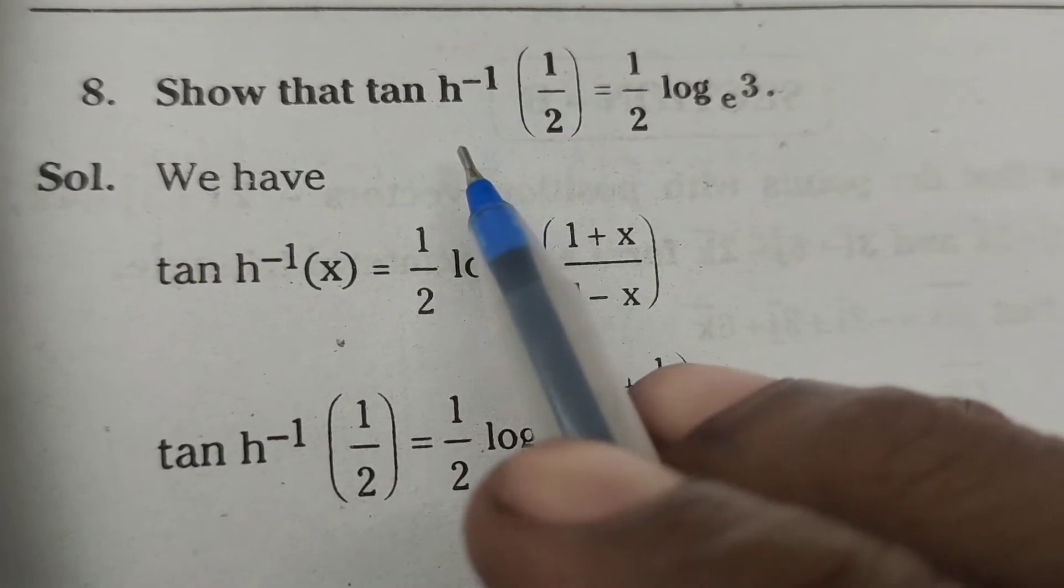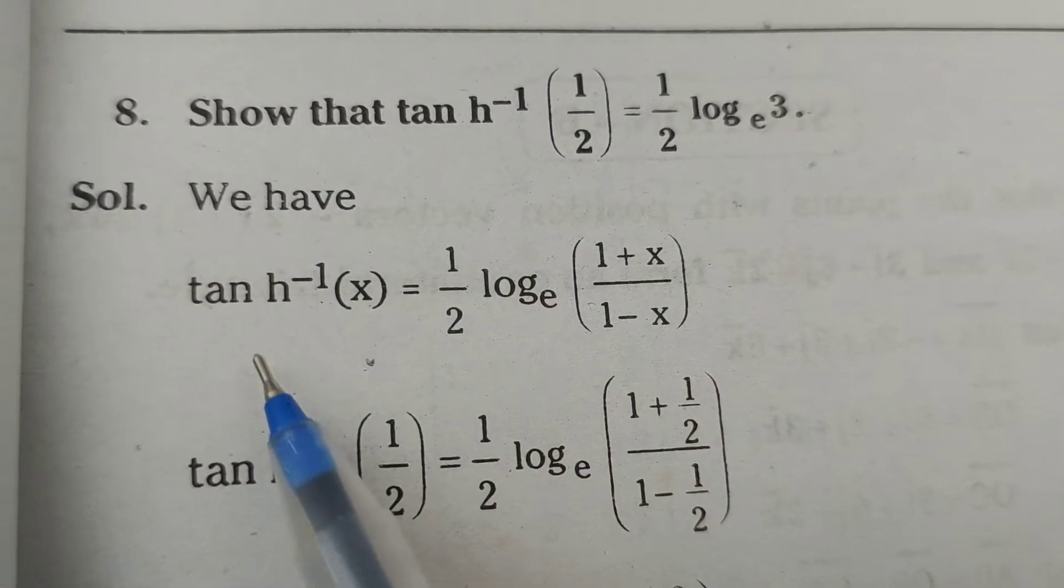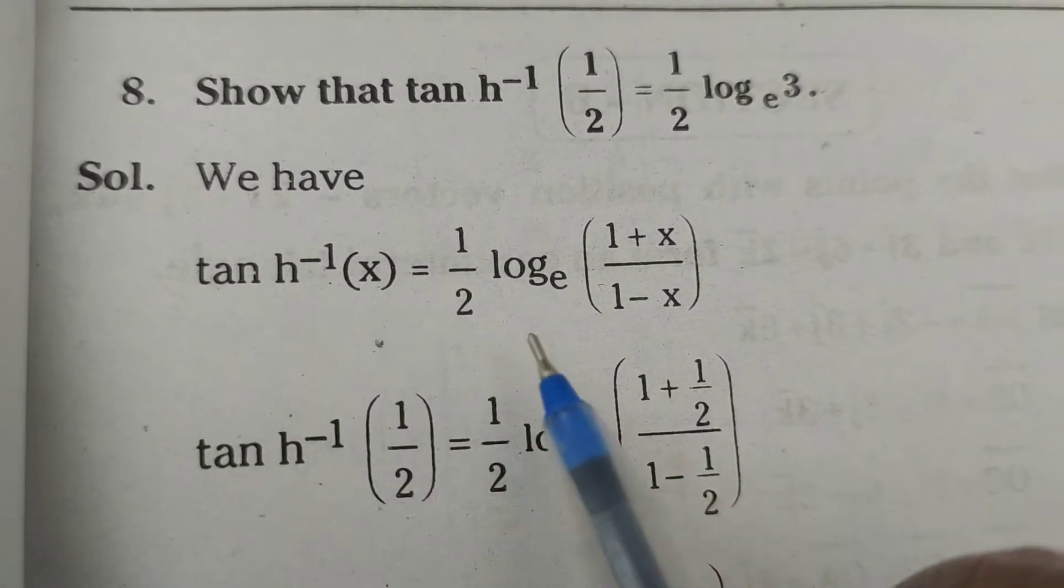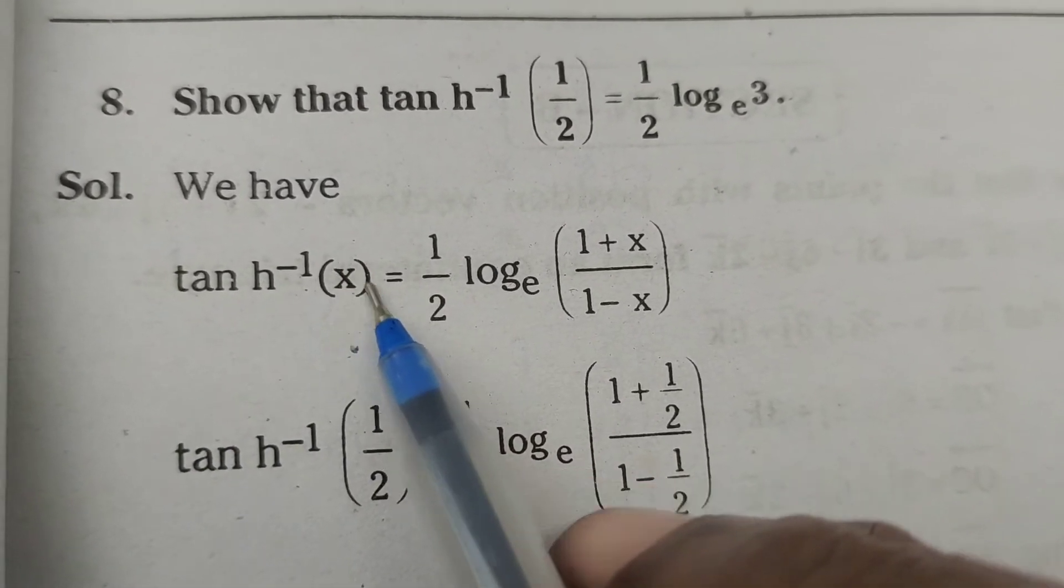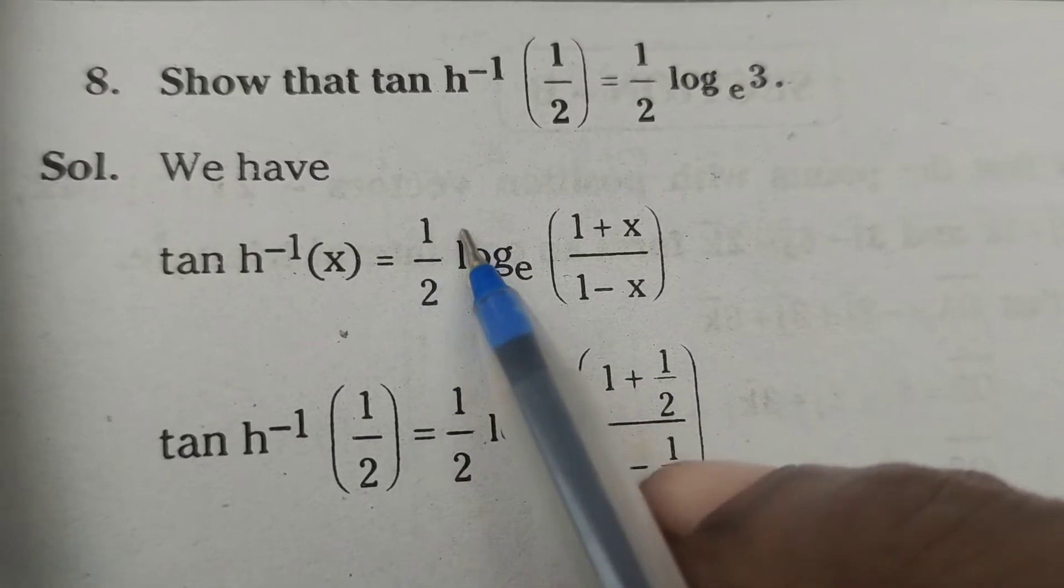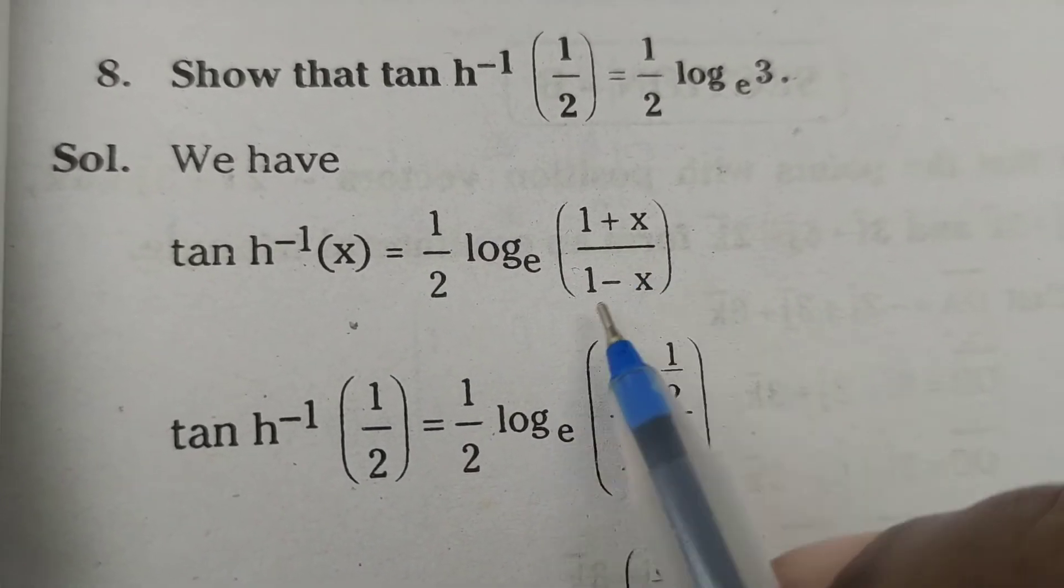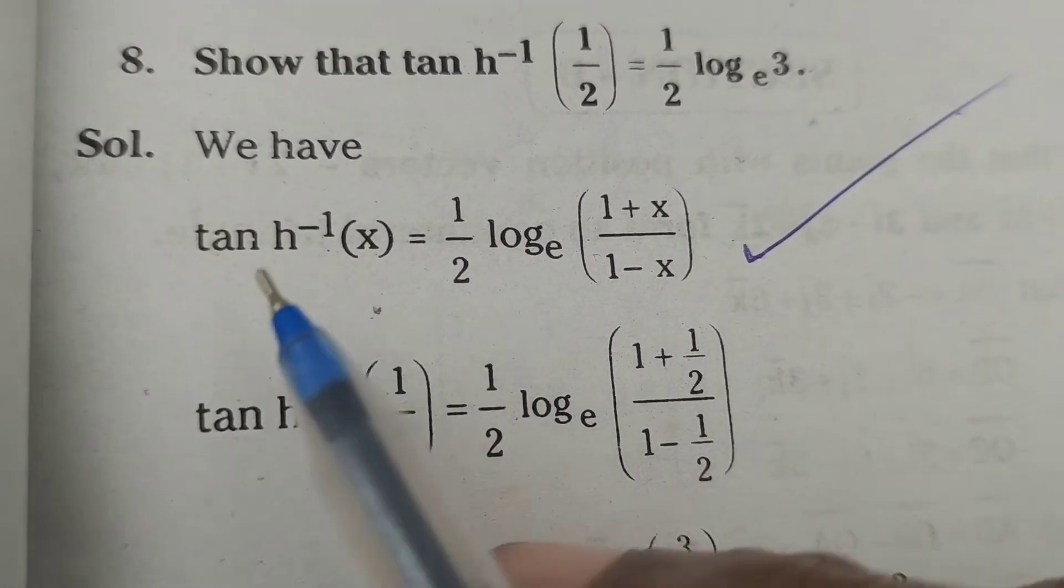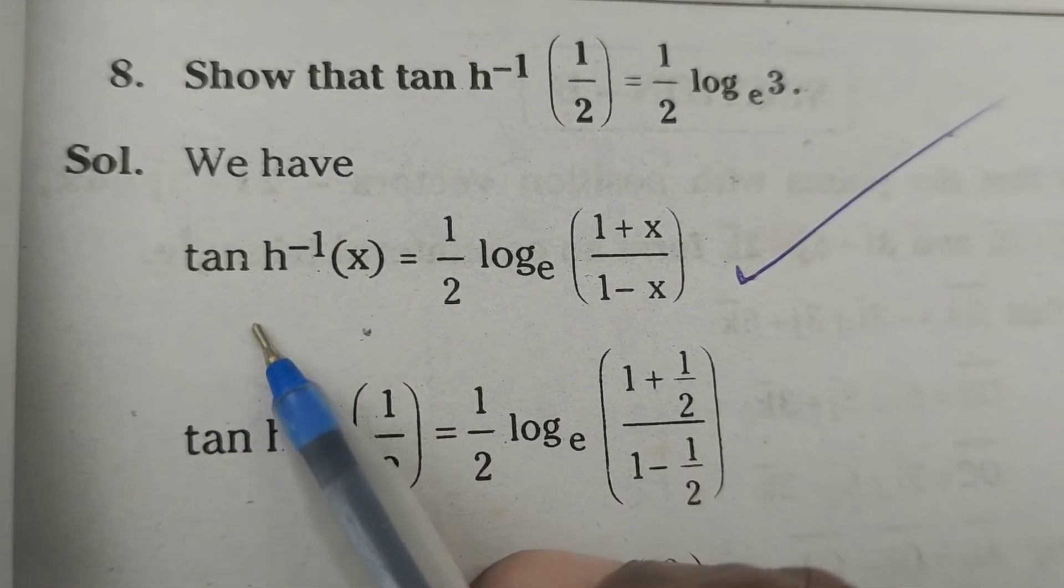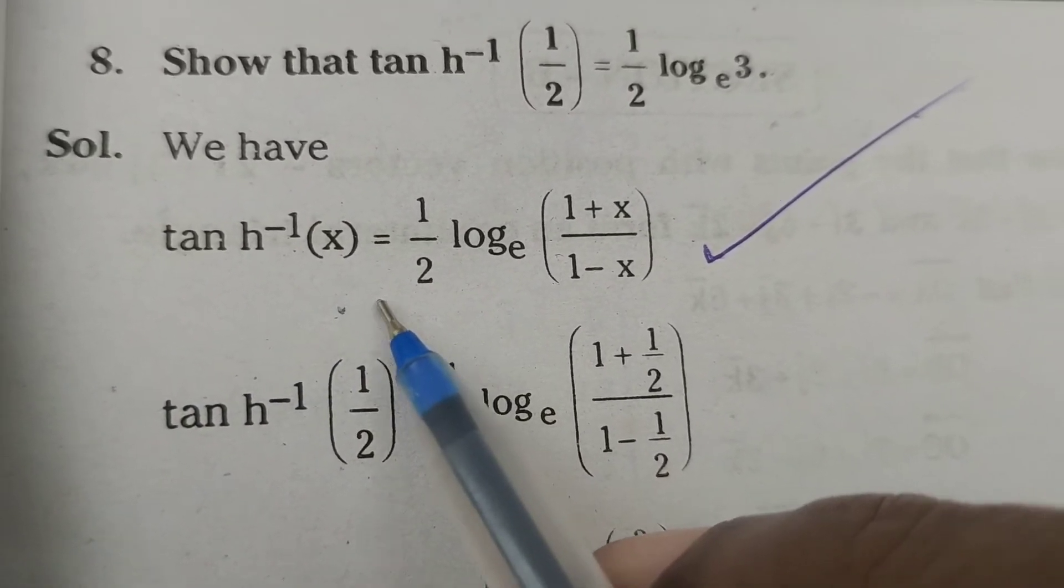Now, here given tanh inverse of 1/2, we use the formula: tanh inverse of x equals (1/2) log_e((1+x)/(1-x)). This is the known formula for tanh inverse of x.